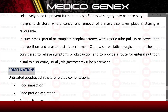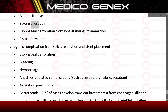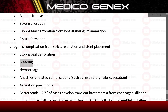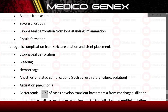Untreated esophageal stricture-related complications include food impaction, food particle aspiration, asthma from aspiration, severe chest pain, esophageal perforation from long-standing inflammation, fistula formation, and iatrogenic complications from stricture dilation and stent placement — including esophageal perforation, bleeding, hemorrhage, and anesthesia-related complications such as respiratory failure and sedation-related issues.